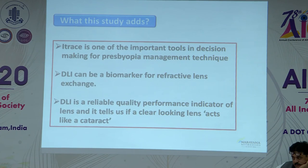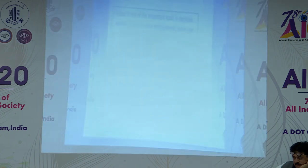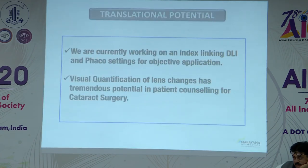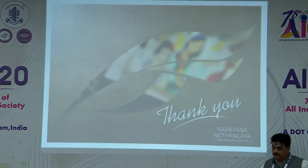Replacing the natural dysfunctional lens with an artificial IOL corrects the visual symptoms. The i-Trace is one of the most important tools in decision making for this management. DLI can be a biomarker for refractive lens exchange and is a reliable quality performance indicator of lens function — if a lens looks like a cataract and acts like a cataract, it has transitional potential. We are currently working on an index linking DLI and phaco settings for objective application, and visual quantification of lens has tremendous potential in patient counseling.